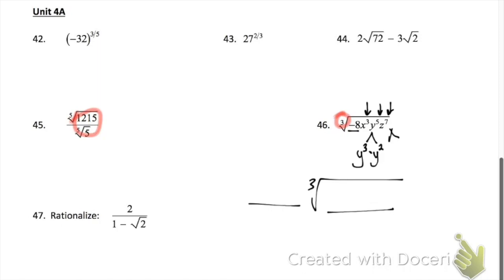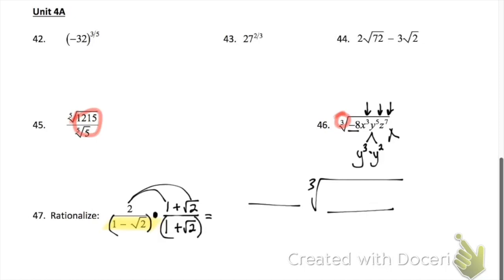Problem 47 — to rationalize, we're multiplying by our favorite form of 1, which in this case would be 1 plus the square root of 2. I took the denominator and changed the sign. When you multiply the top, distribute the 2. When you multiply the bottom, you can use the box method, FOIL, or the trick of just multiplying the first two and multiplying the last two.